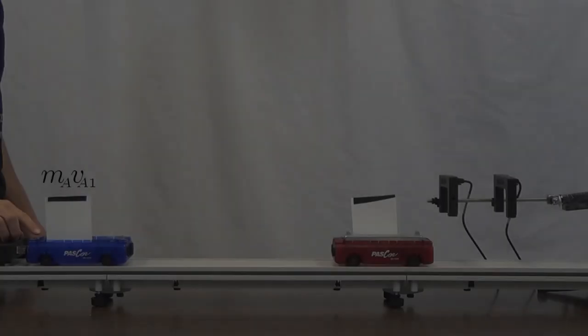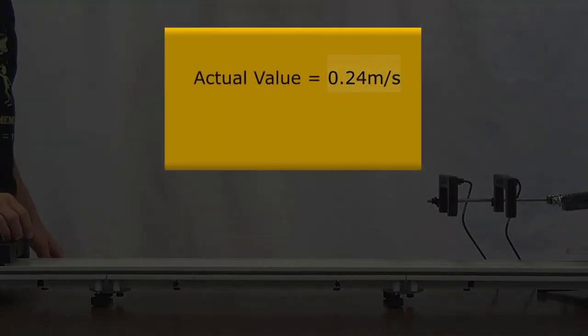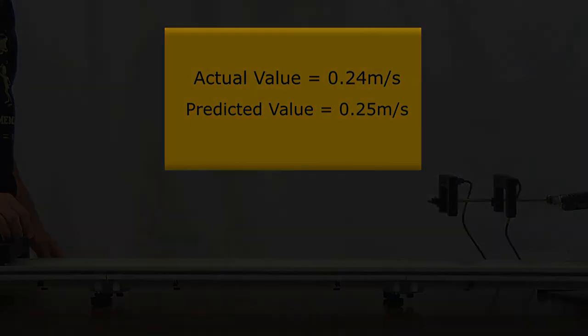Note how the speed scales compared to our initial velocity for each test. Additionally, notice that these numbers generally are as predicted.